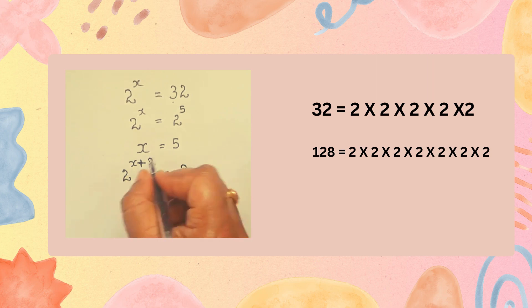2 to the power of x value is 5 plus 2. 2 to the power of 5 plus 2 is 7. 2 to the power of 7 is equal to 128.